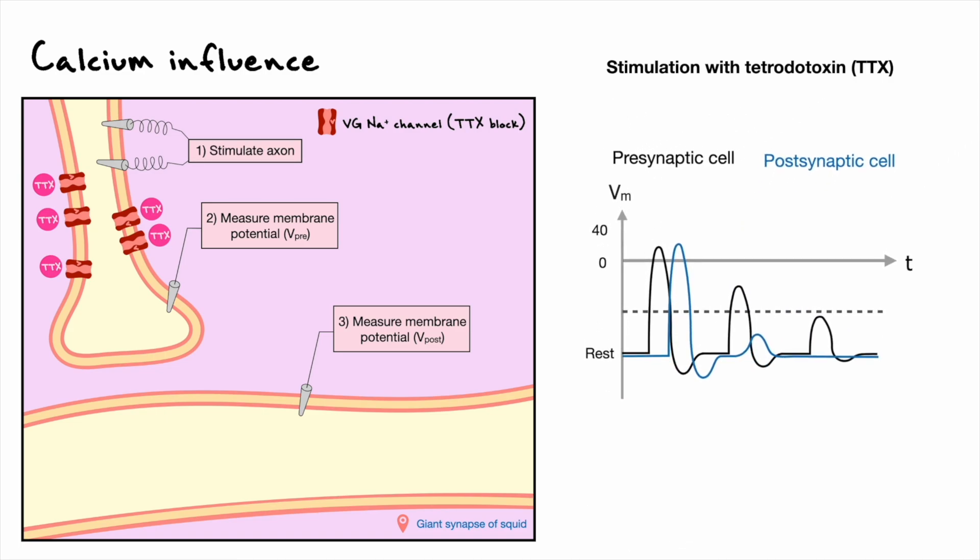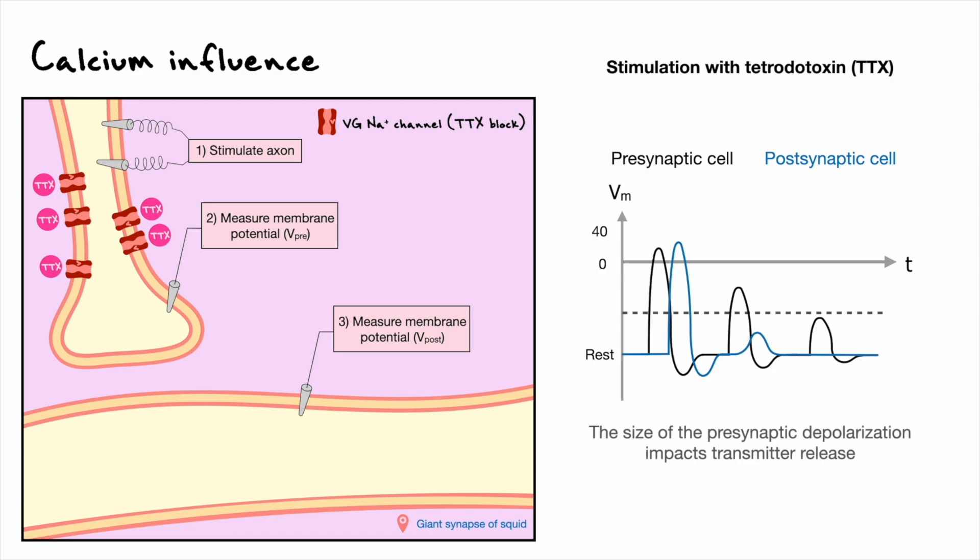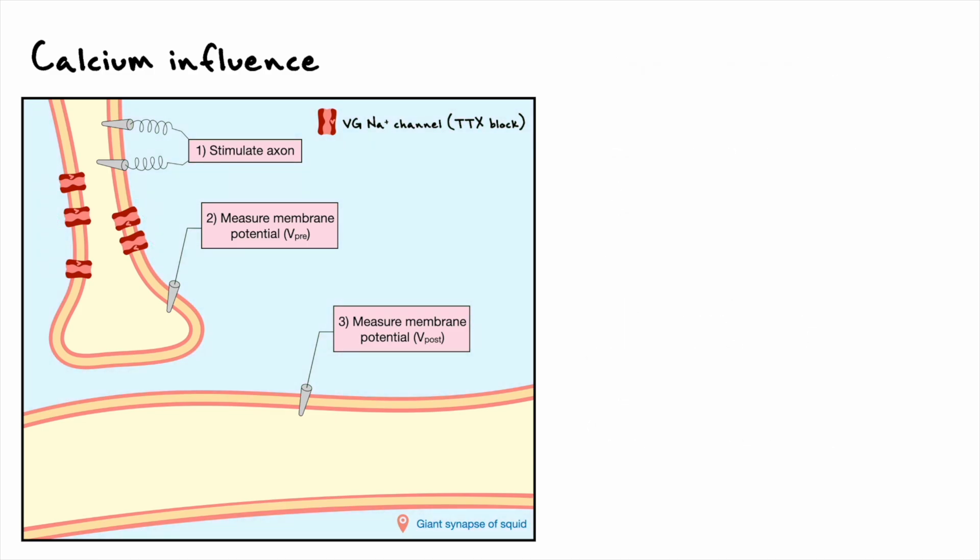This result entails that the size of the pre-synaptic depolarization influences the post-synaptic response. We know from previous discussions that the action potential is mainly governed by the influx of sodium and the subsequent efflux of potassium through voltage-gated channels. The experimenters at the time knew that aspect as well and wanted to see if sodium and potassium also had something to do with the release of transmitters.